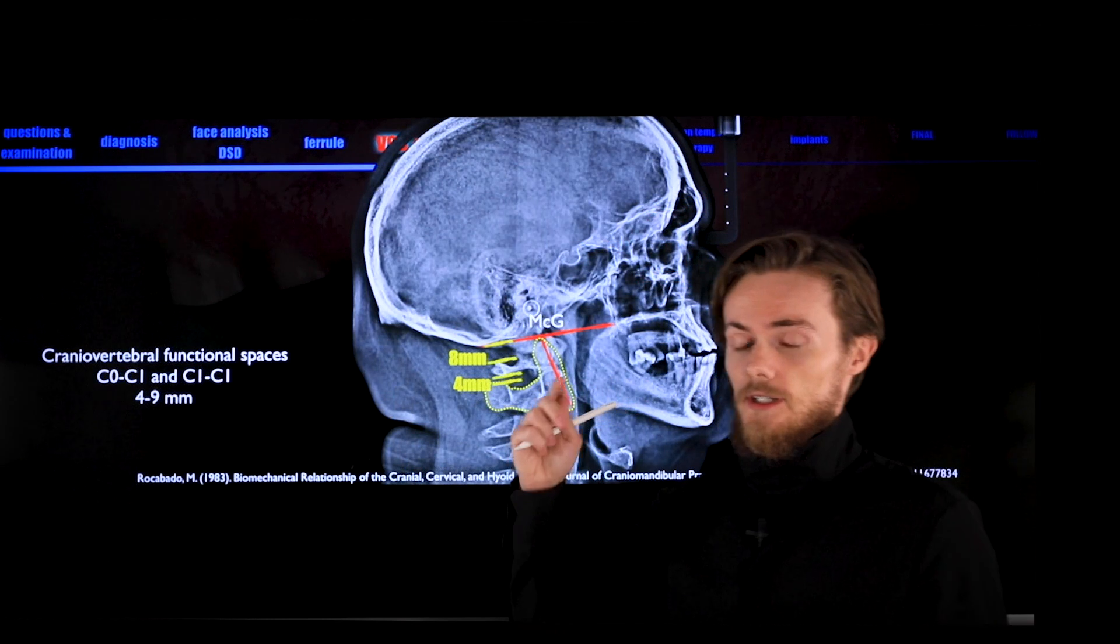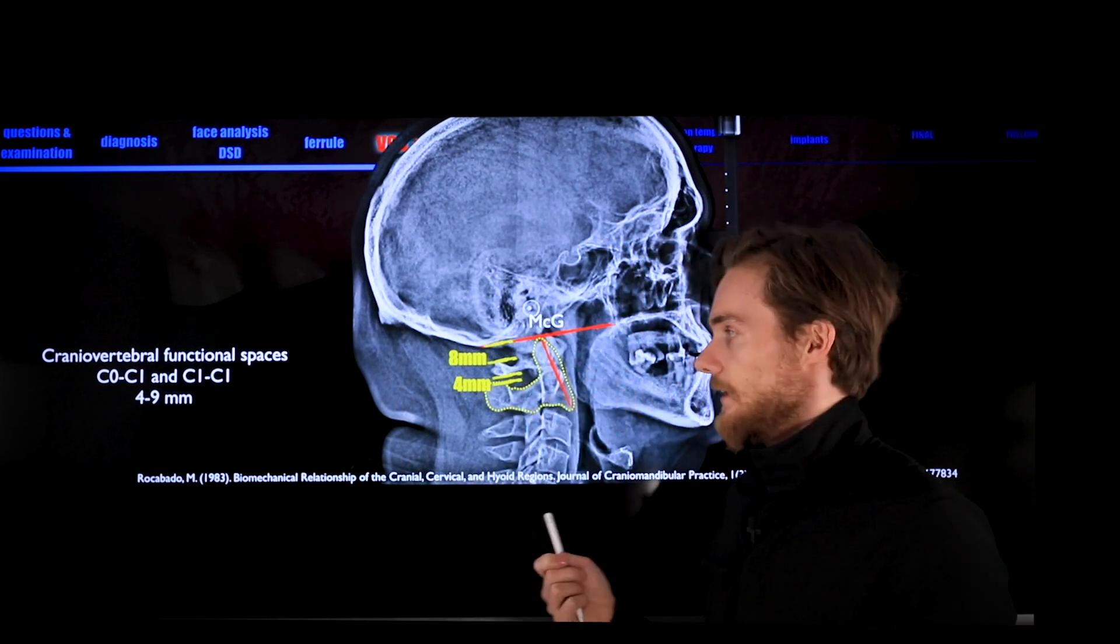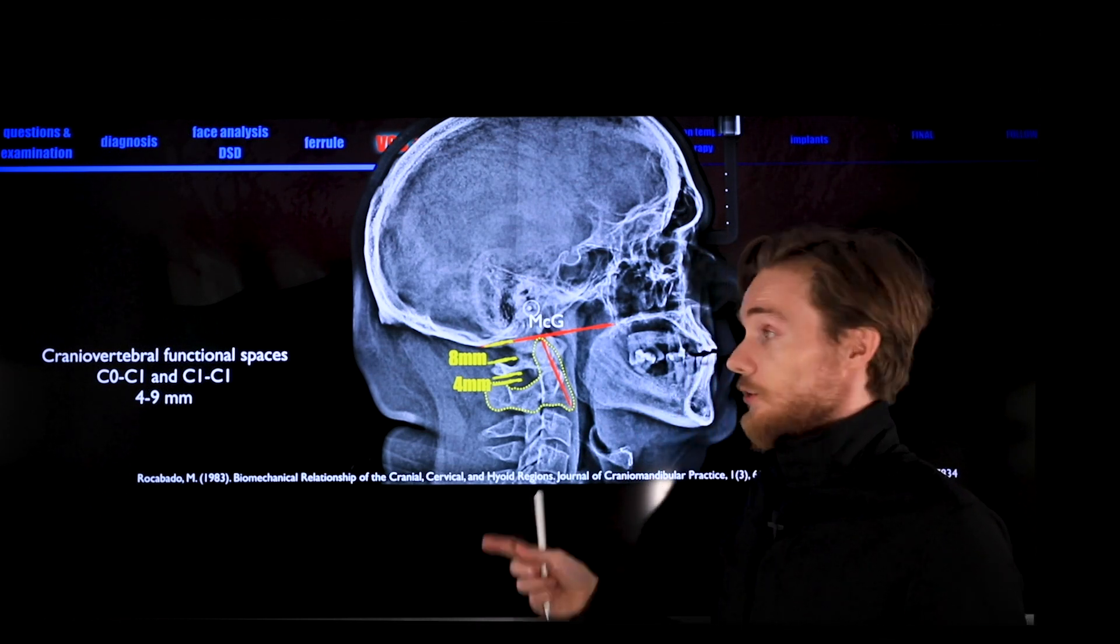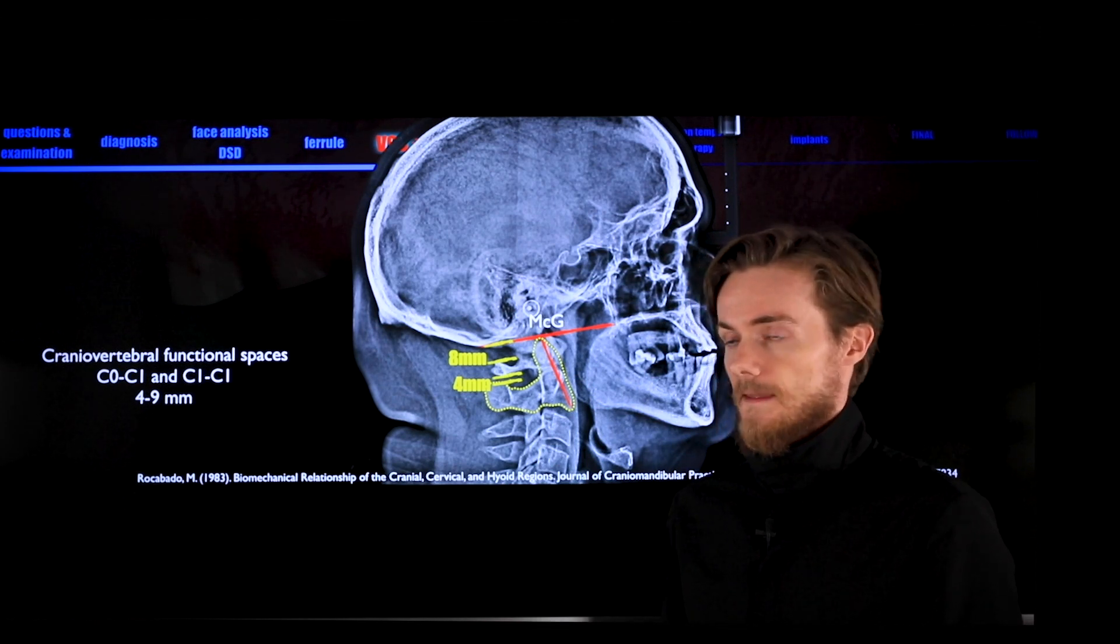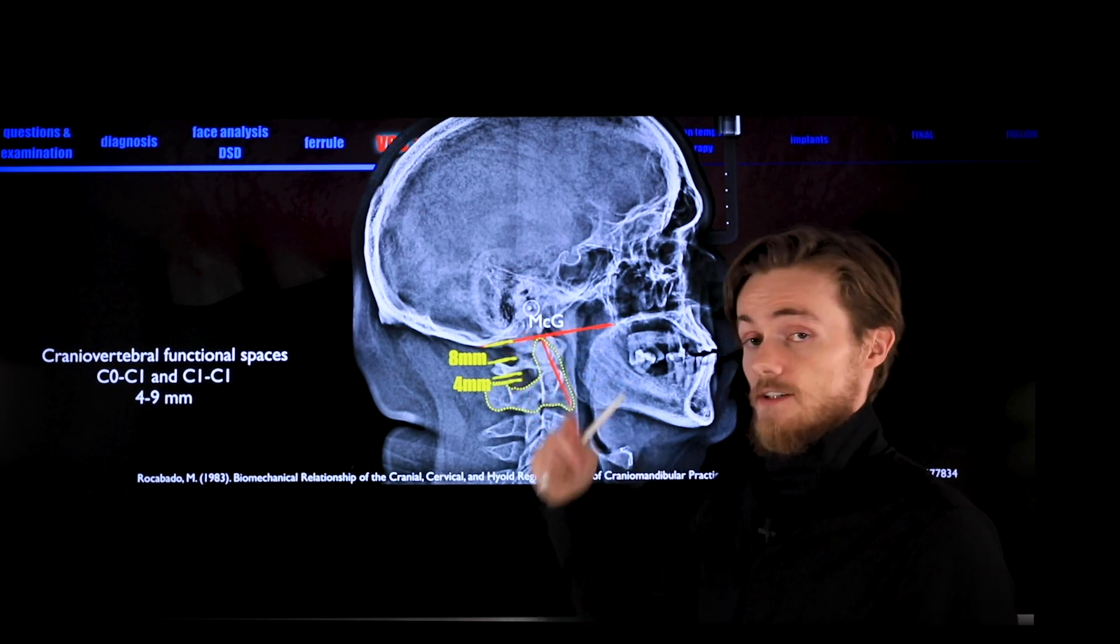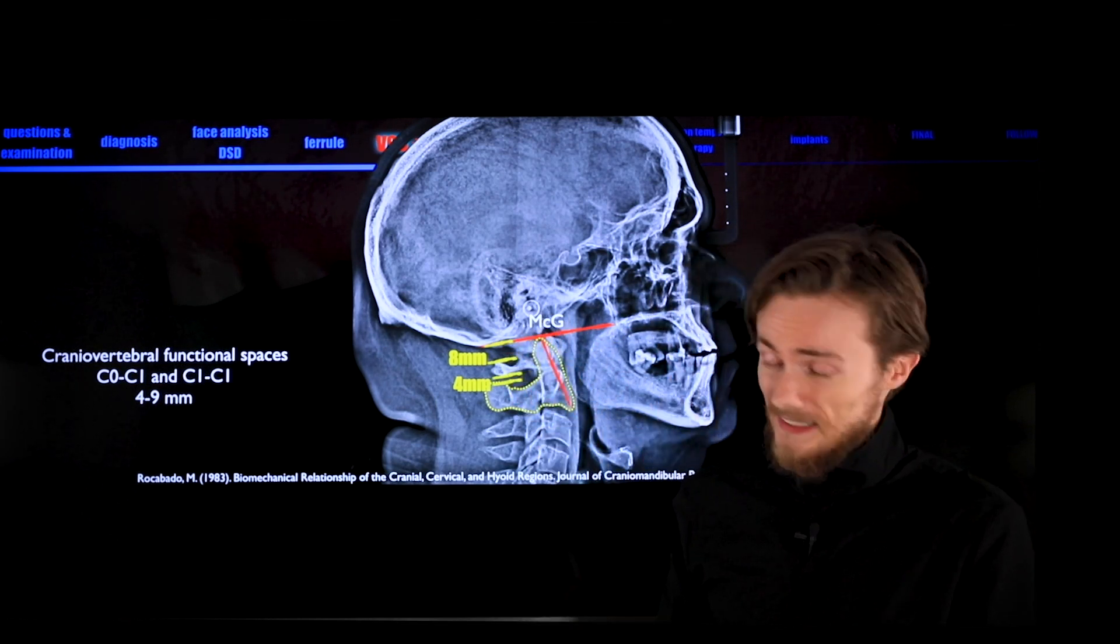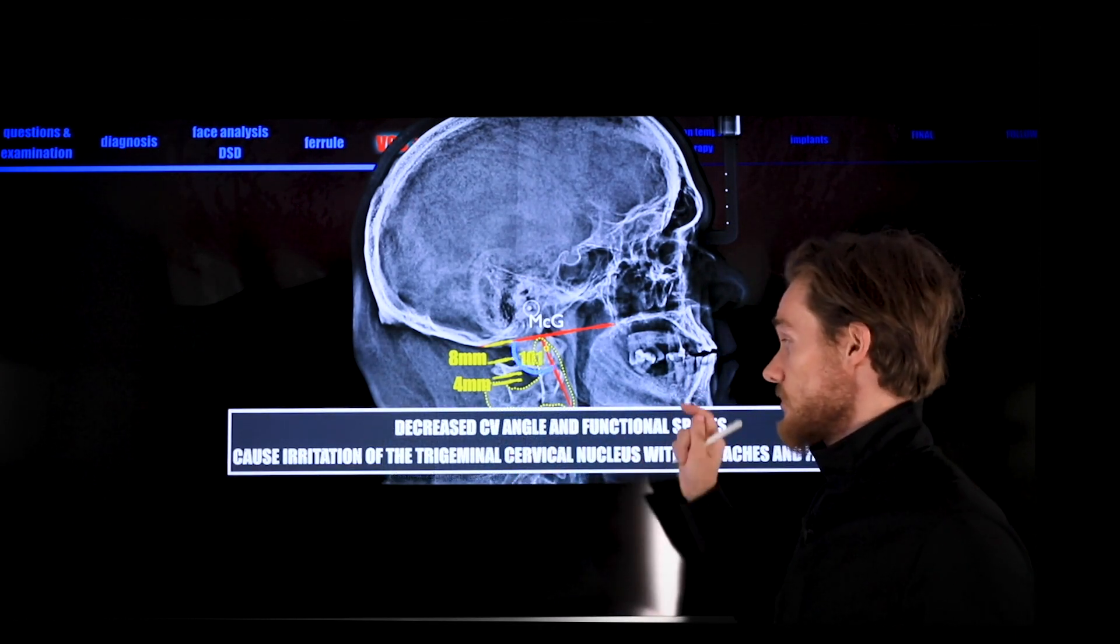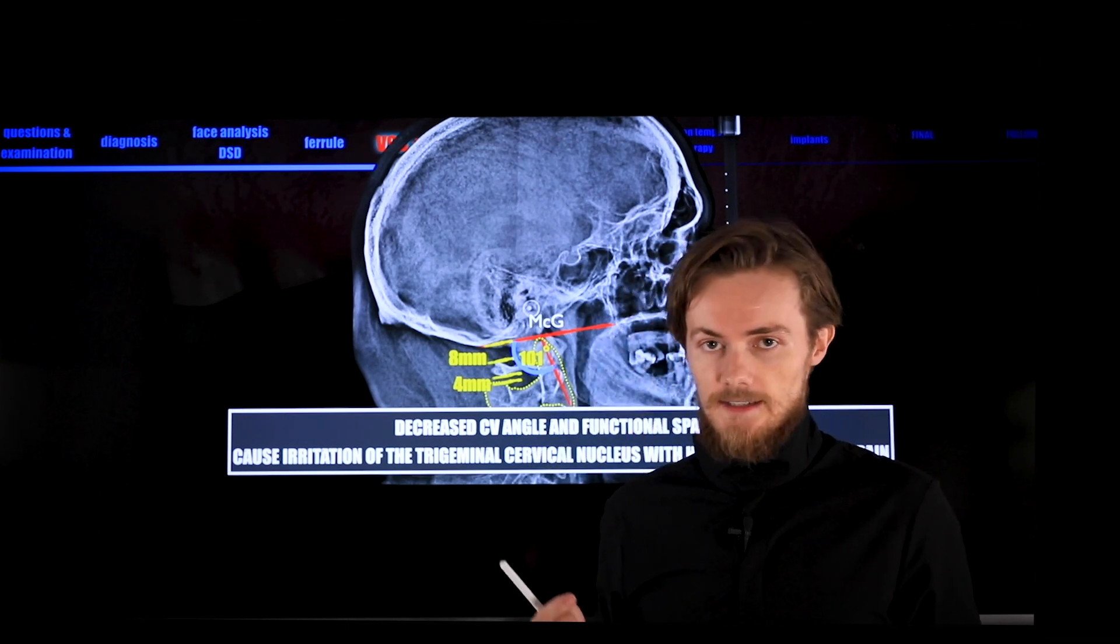This is why, especially when you have a patient with orofacial pain and you have a patient who looks like this, and you do want to increase VOD, make a cephalometric picture with the natural head posture. And then what we check is craniovertebral angle and the functional spaces between the cervical vertebrae. Because once you decrease these spaces, there is irritation of trigeminal cervical nucleus, and it may give you the irritation on the face.